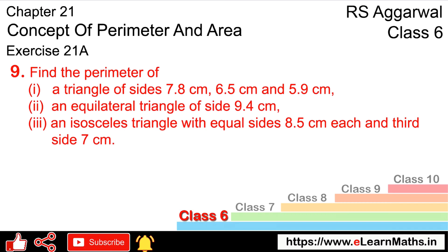Let's do question number 9 of exercise 21A on the concept of perimeter and area. Question number 9 says: find the perimeter of the following. In the first part, a triangle of sides 7.8 cm, 6.5 cm, and 5.9 cm.